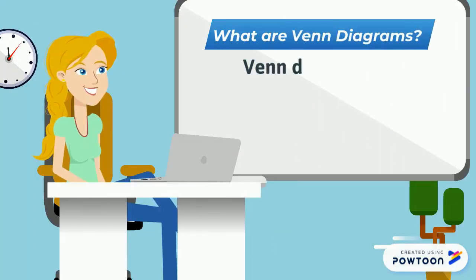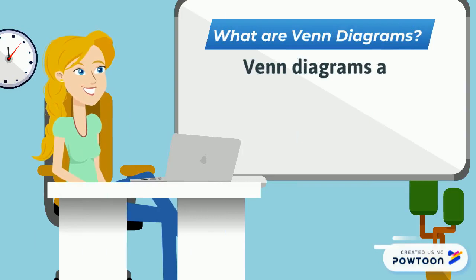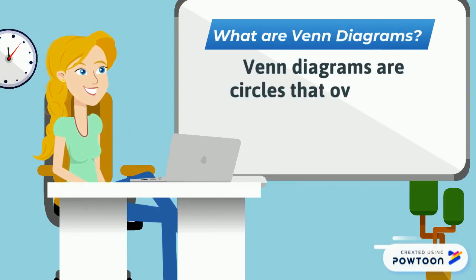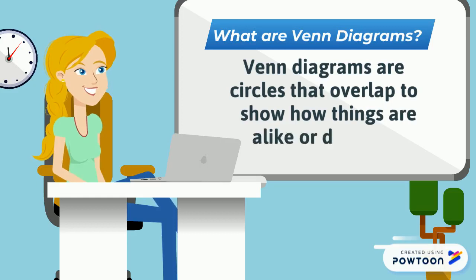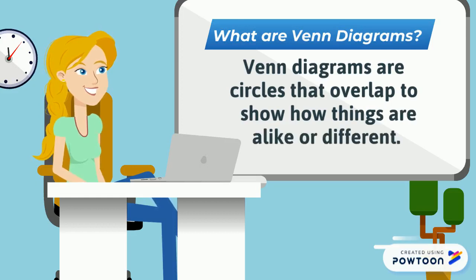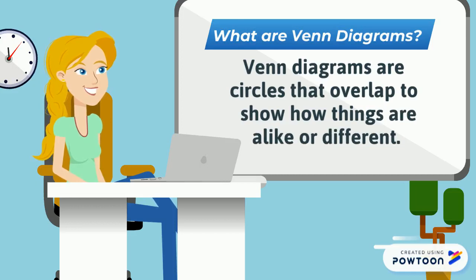Now you might be thinking to yourself, what are Venn diagrams? Well, simply put, Venn diagrams are circles that overlap to show how things are alike or to show how things are different.